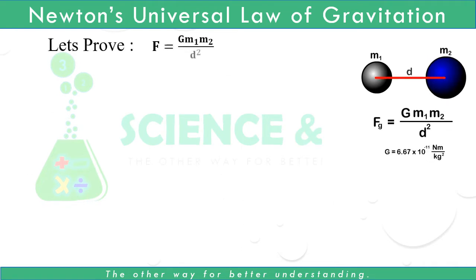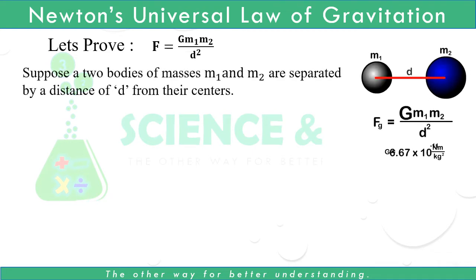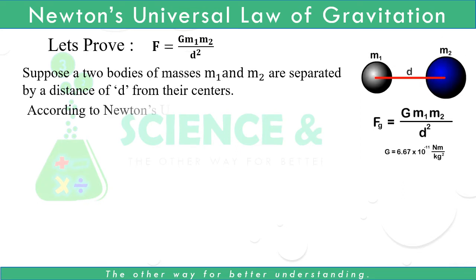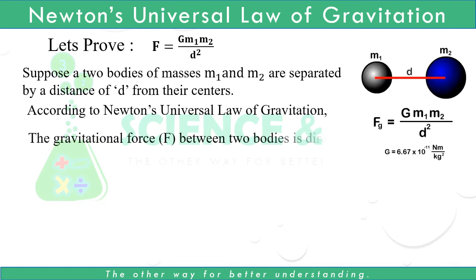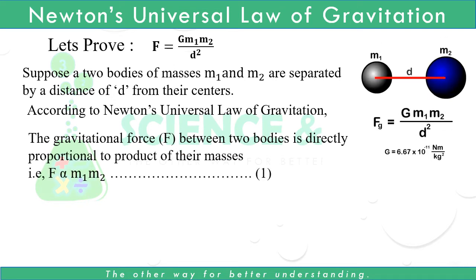Let's prove F = G·M₁·M₂ / D², where symbols have their usual meaning. Suppose two bodies of masses M₁ and M₂ are separated by a distance D from their centers. According to Newton's Universal Law of Gravitation, the gravitational force F between two bodies is directly proportional to the product of their masses. That is, F ∝ M₁·M₂. — Relation 1.